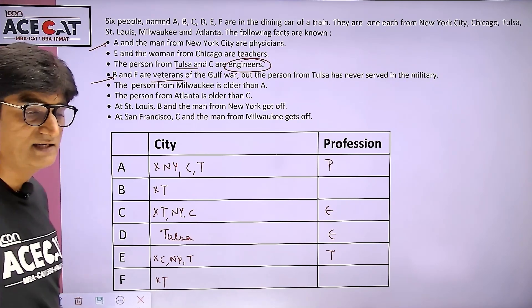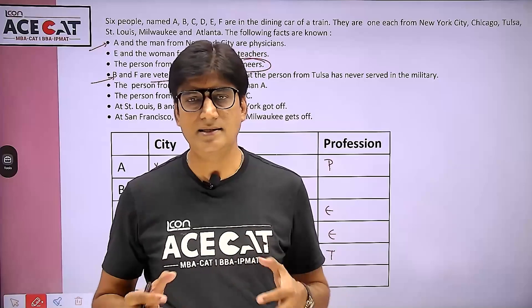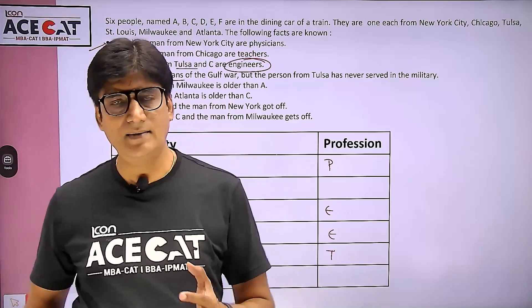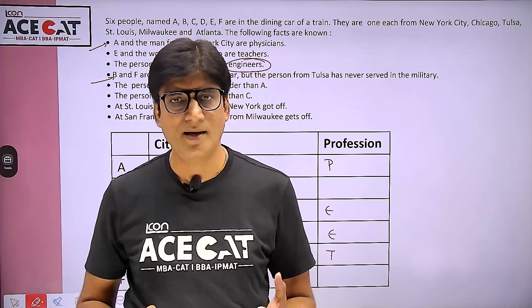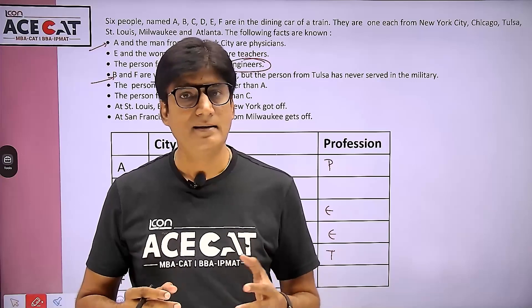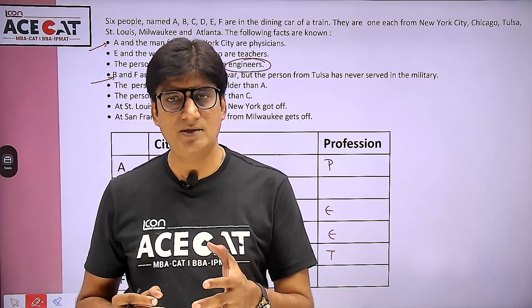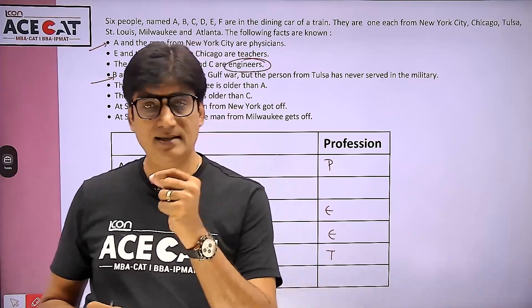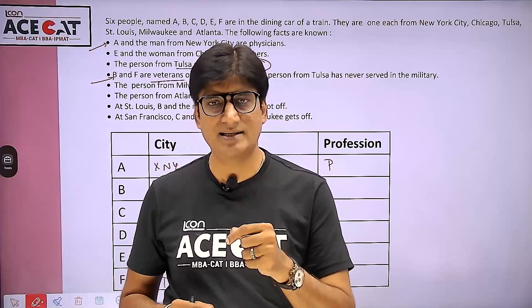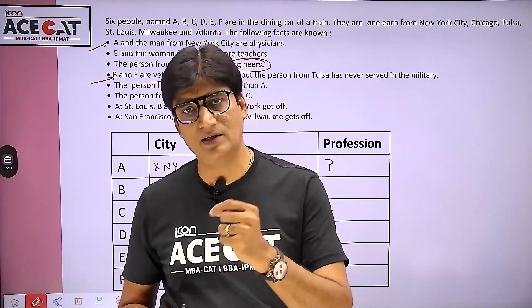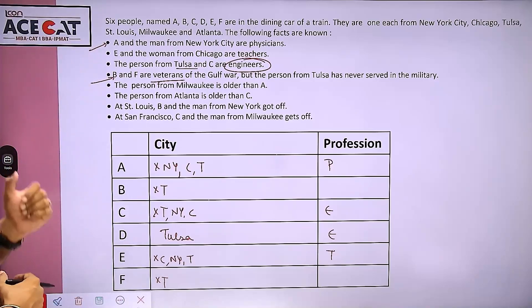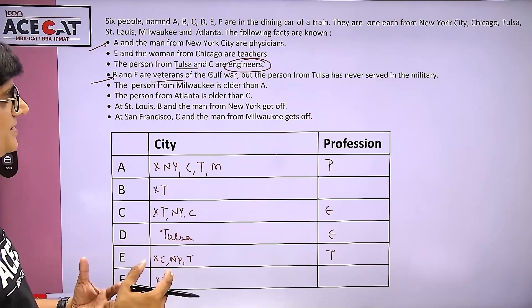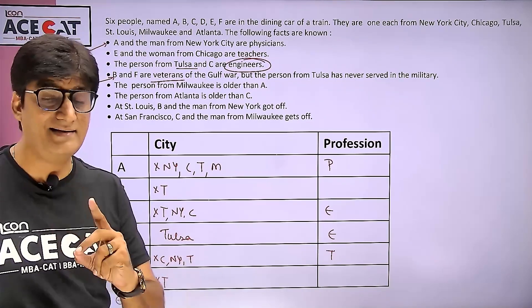Coming to the next clue: the person from Milwaukee is older than A. Now, many students might feel we need to compare ages too. But age-wise, there isn't much information to build a full age arrangement — so let's just hold on to that. The most important interpretation here is: since the Milwaukee person is older than A, A cannot belong to Milwaukee. So A does not belong to Milwaukee — at the very least, that is clear.